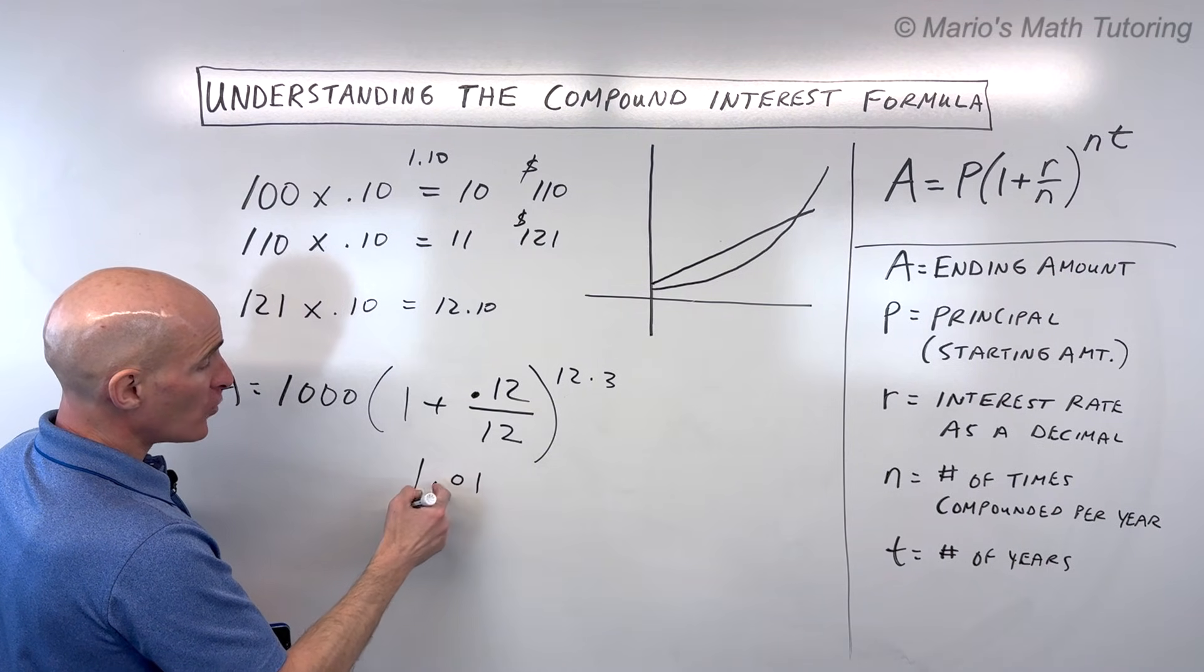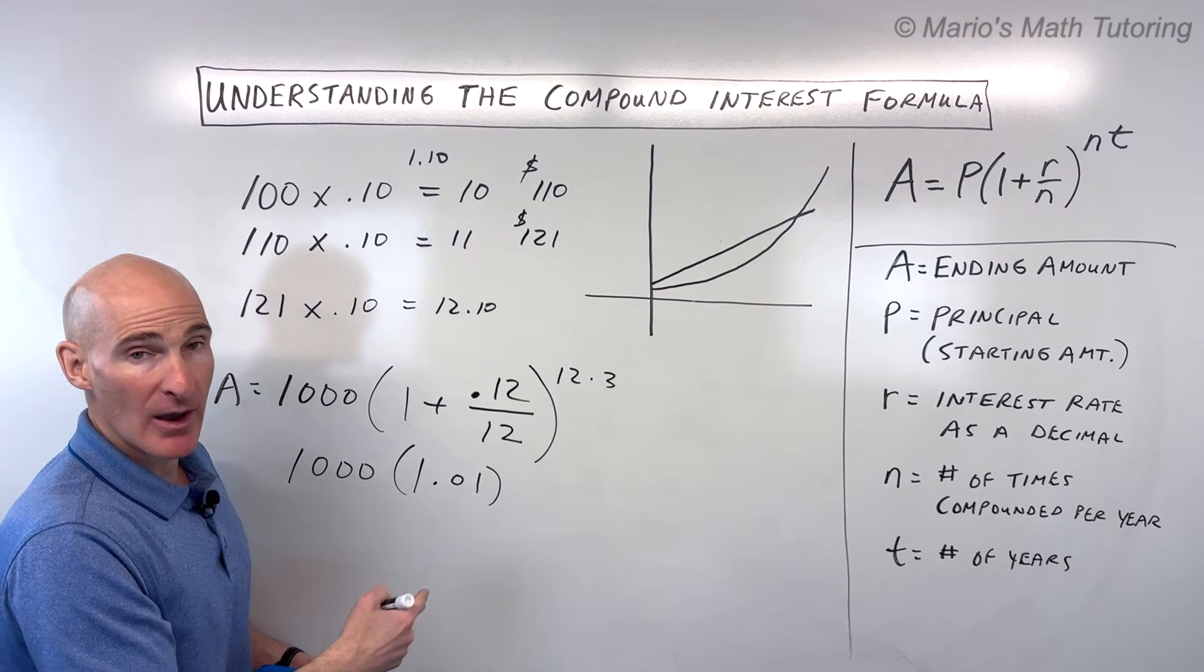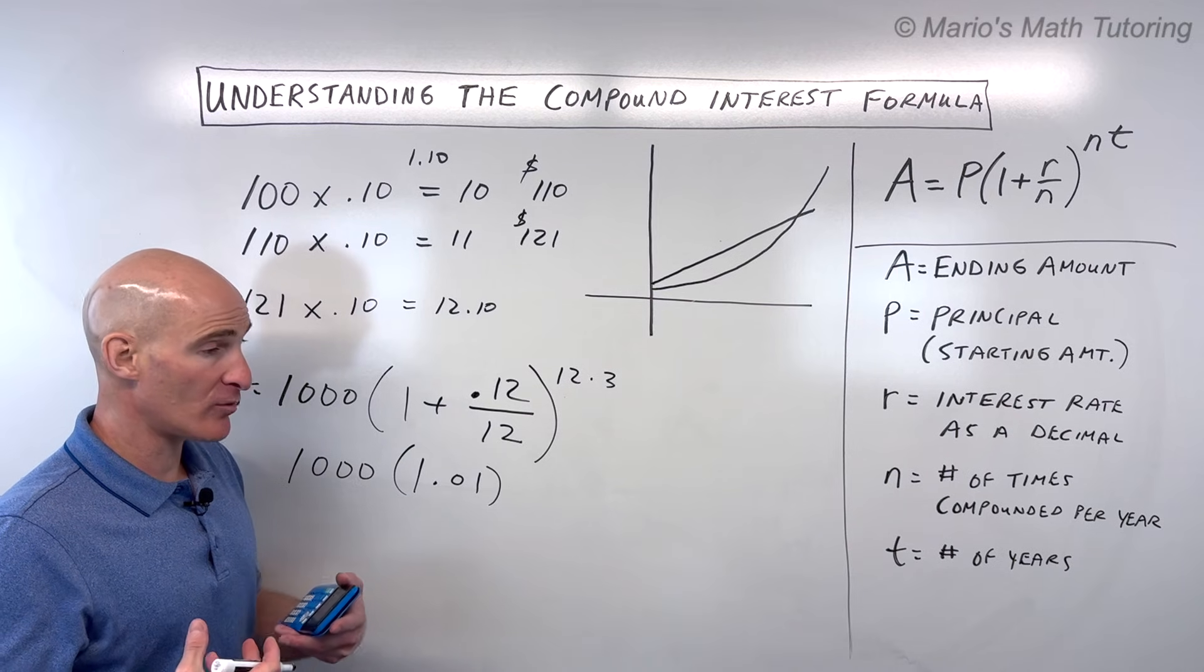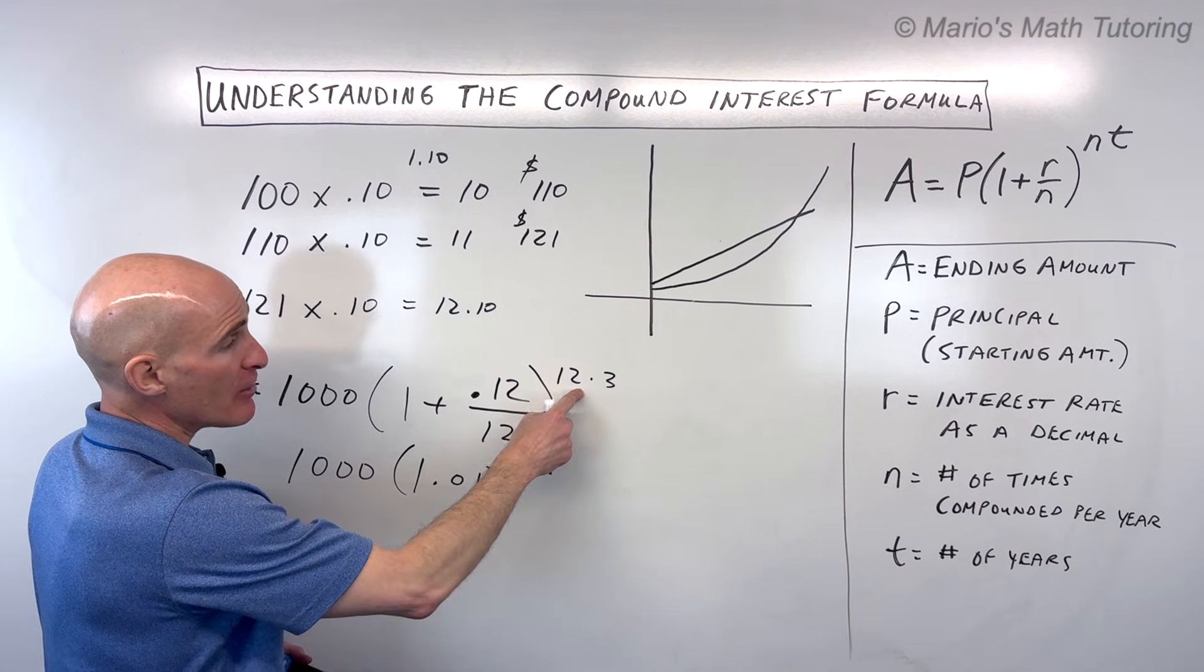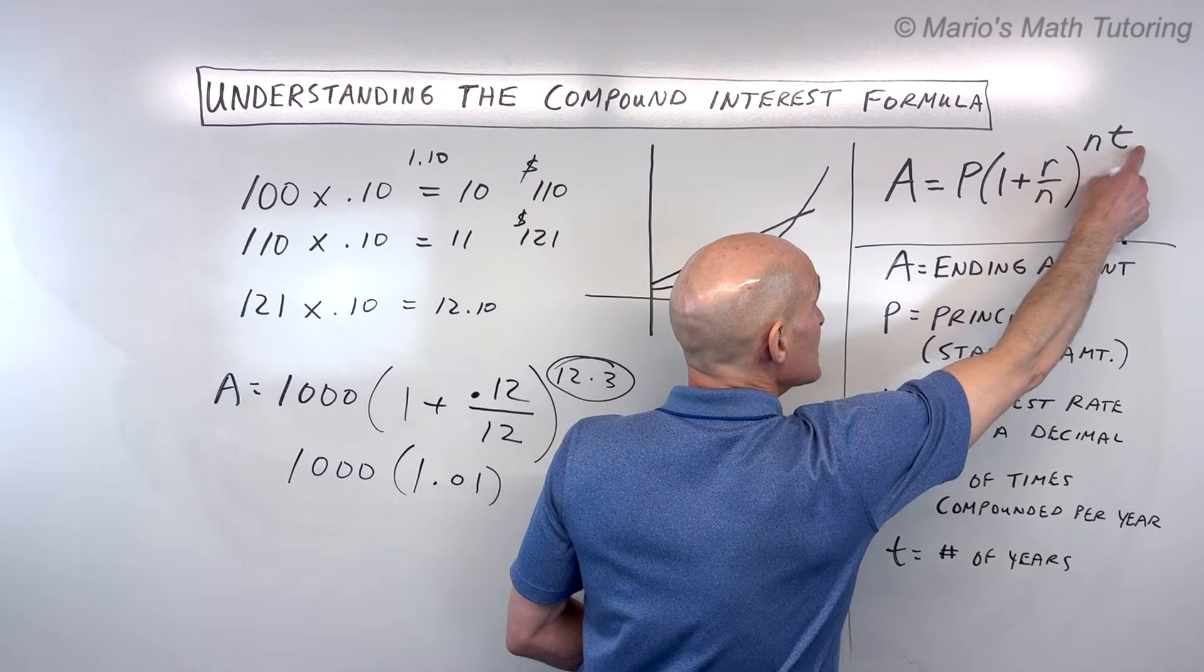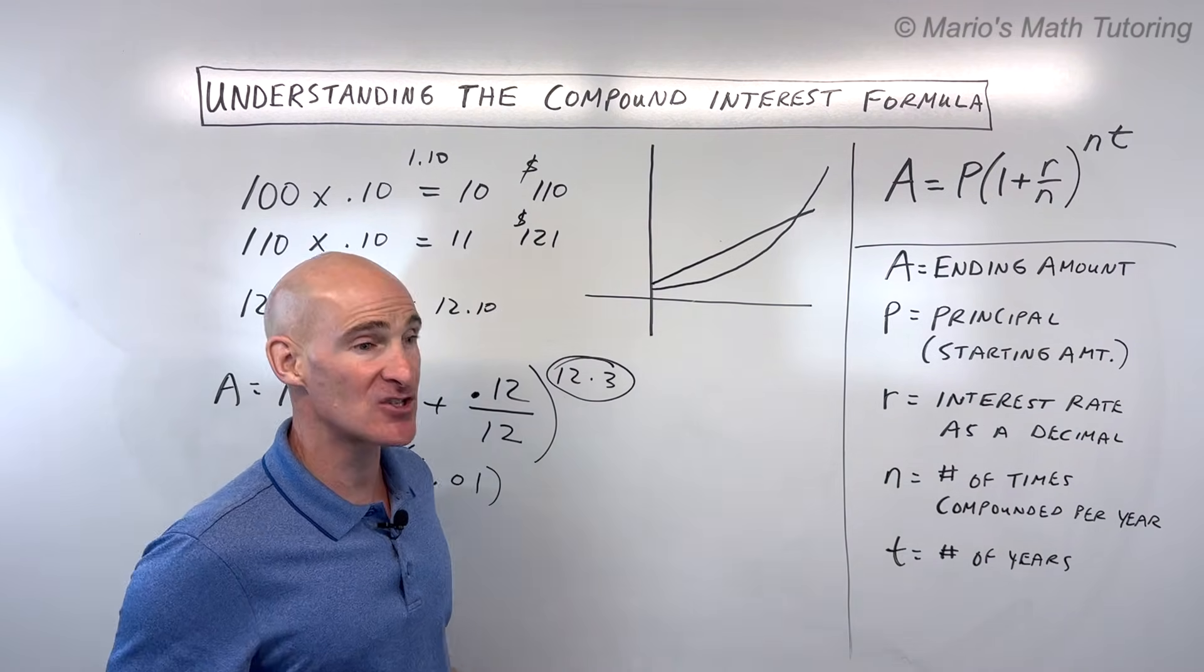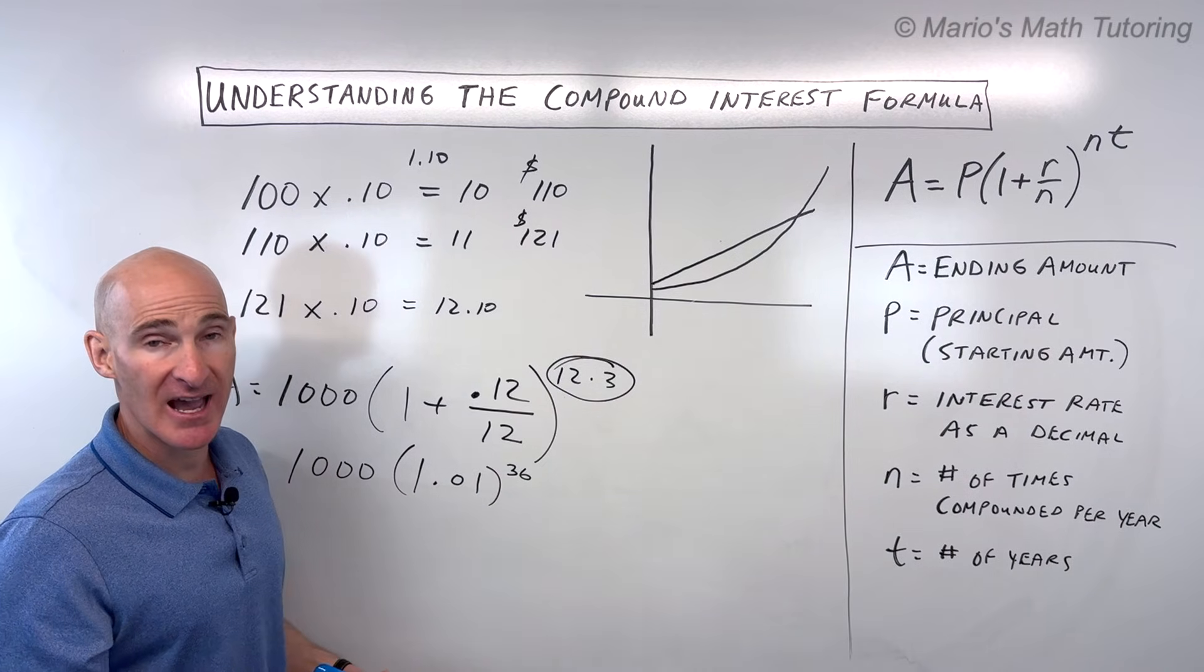So this becomes 1.01. So every month you're taking that $1,000, you're multiplying it by 1.01. That's how much you have at the end of the month. Then you take that and you multiply that number by 1.01, et cetera. But notice what's happening. In three years, how many months is that? That's 36 months. So what this NT is giving you is the number of times that you're pushing that snowball, you're rotating that snowball, you're compounding. And in this case, we're compounding 36 times.